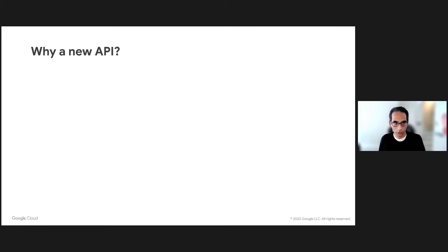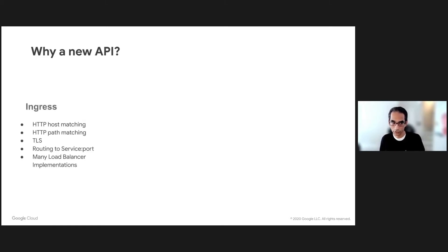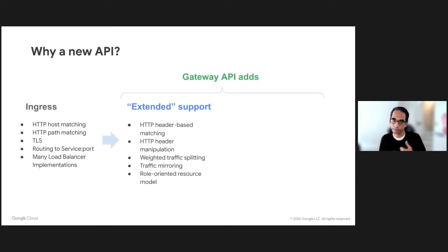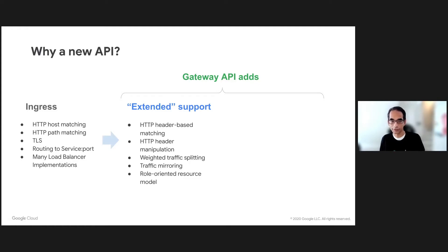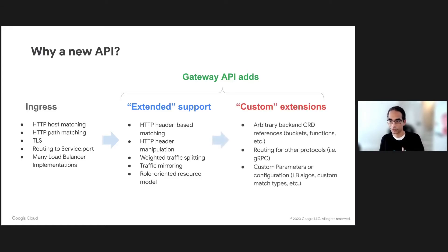So why do we need a new API? Well, ingress does do a lot of things, but the Gateway API provides additional features — especially header-based matching, weighted traffic splitting, and others. One thing to note is that Gateway API is an evolution of ingress. Ingress will be fully supported, and Gateway API just adds features additionally. There is extended support, and it also introduces custom extensions where you can have support for other protocols like gRPC, other load-balancing algorithms, and so on.